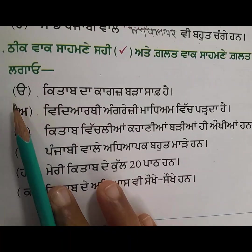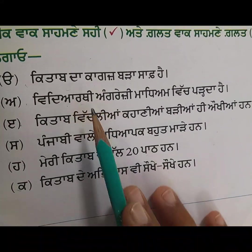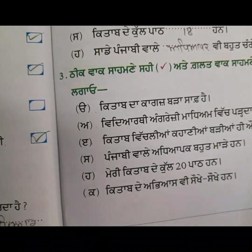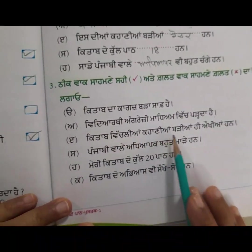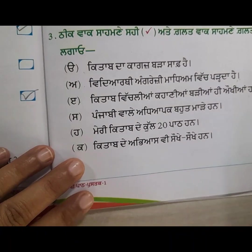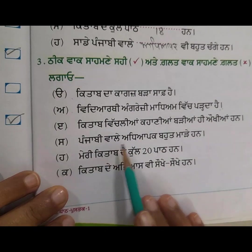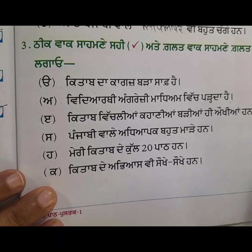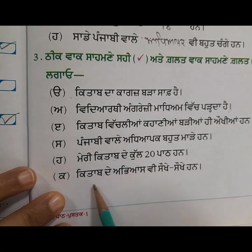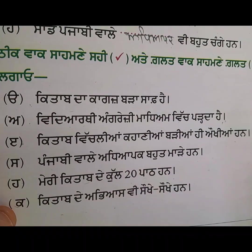Next we will do True or False. Kitaab da kaagaz bada saaf hai — True, correct. Vidyarthi angrezi madhyam wich padhda hai — Harjeet studied in an English medium school, so True. Kitaab wichliyan kahaniyan badhiyan hi okhiyan han nahi — False, because the stories in the book were easy and very interesting. Punjabi wali adhyapak bahut maade han — False. Meri kitaab de kul bepaath han — False, there were 18 lessons. Kitaab de abhyas wich okhey sokhey han — the exercises in the book were easy, so True.